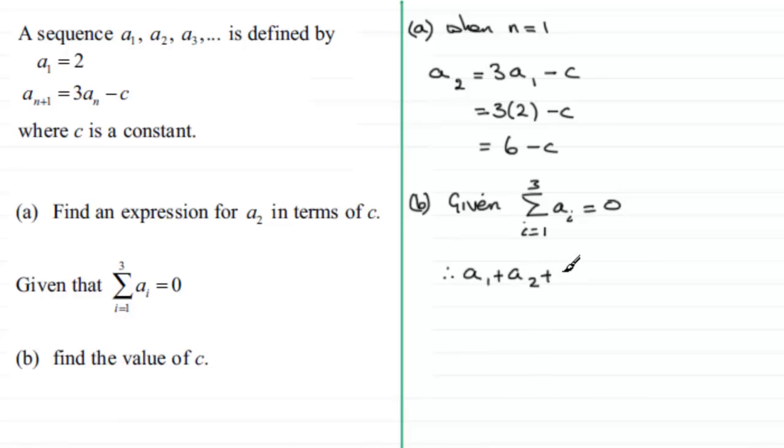We know the first term a₁ is 2, and we just worked out that a₂ is 6 - c. So we have 2 + (6 - c) plus the third term of the sequence a₃.